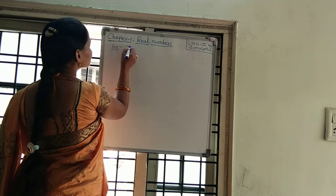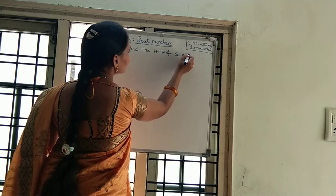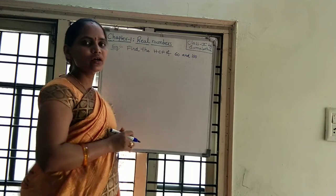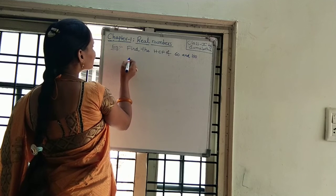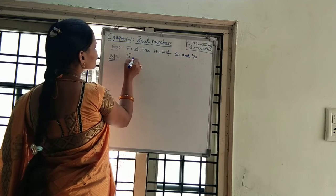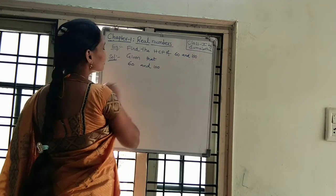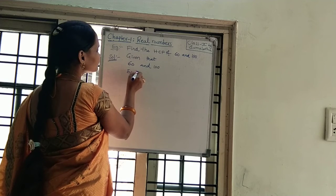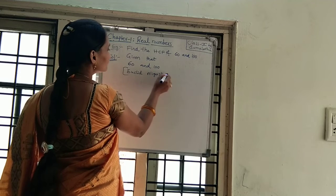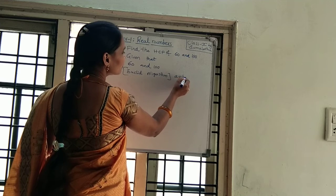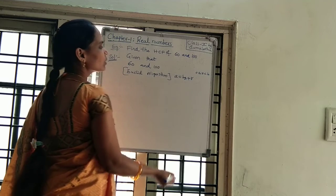Example: find the HCF of 60 and 100. Here, we can take these two values as A and B. According to Euclid's division lemma, we first write what is given — 60 and 100. By Euclid's algorithm, the statement is in the form A = BQ + R, where 0 ≤ R < B. This is the condition.